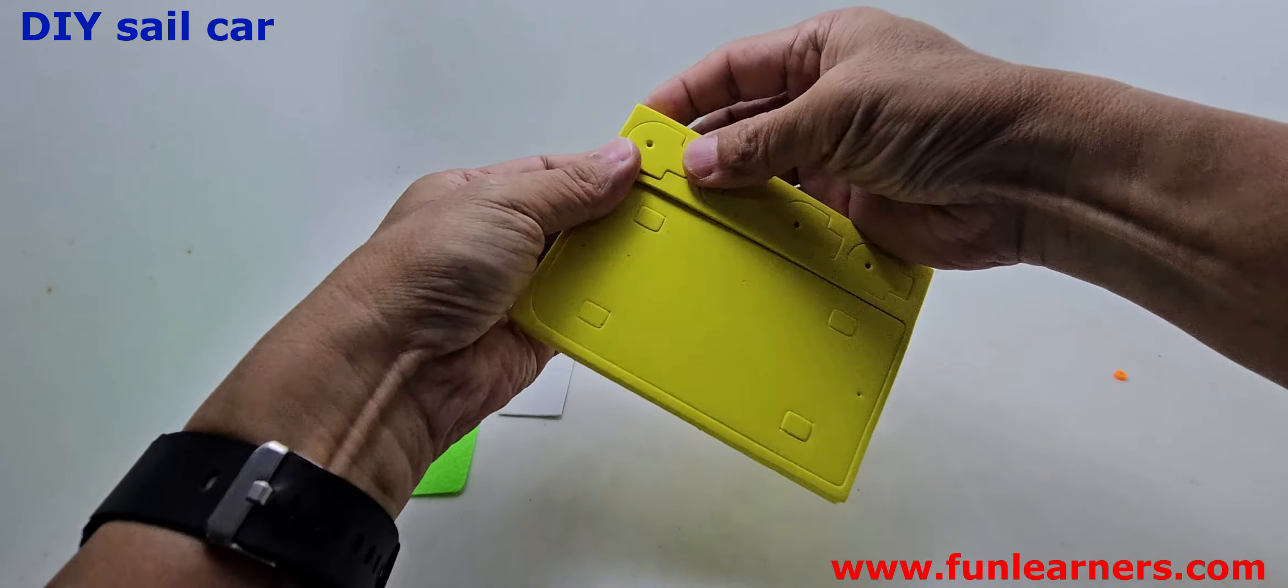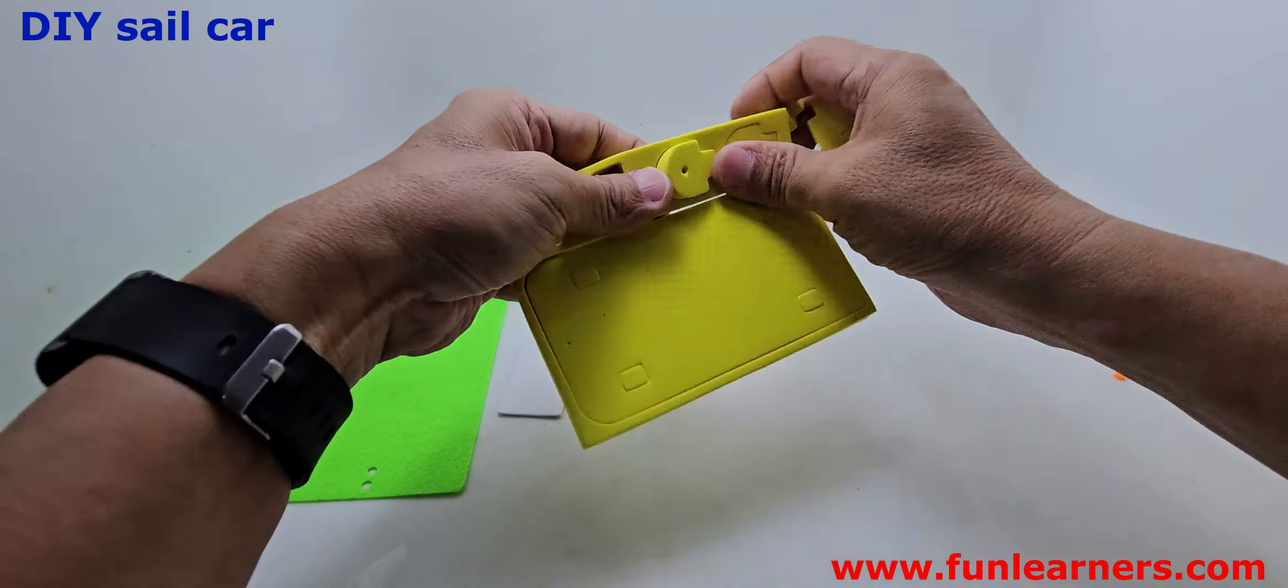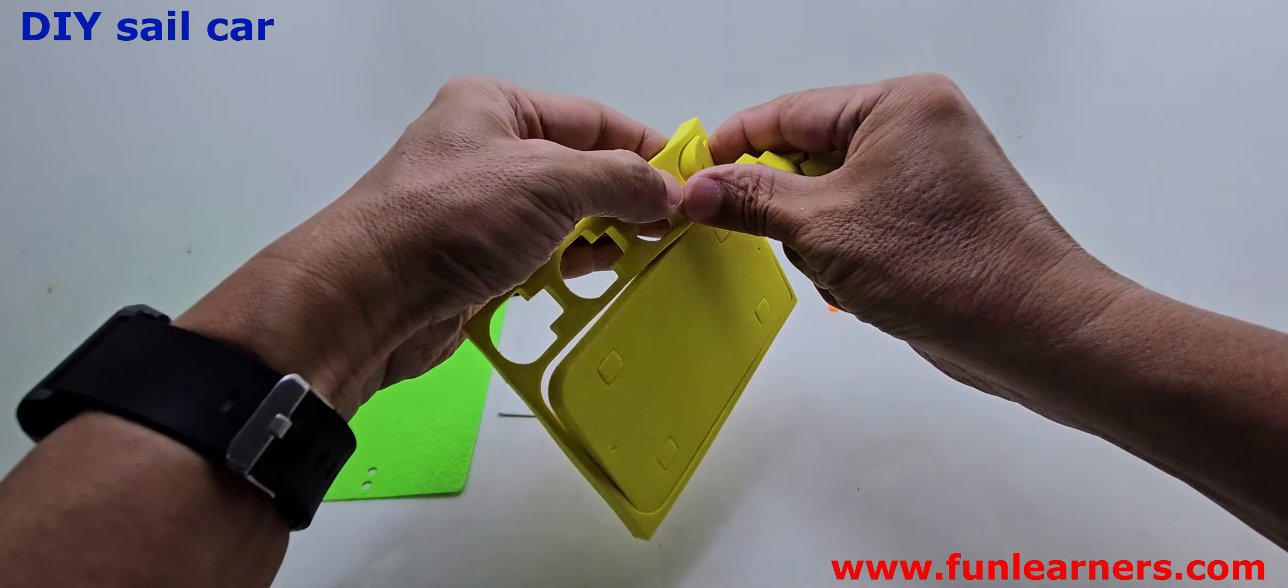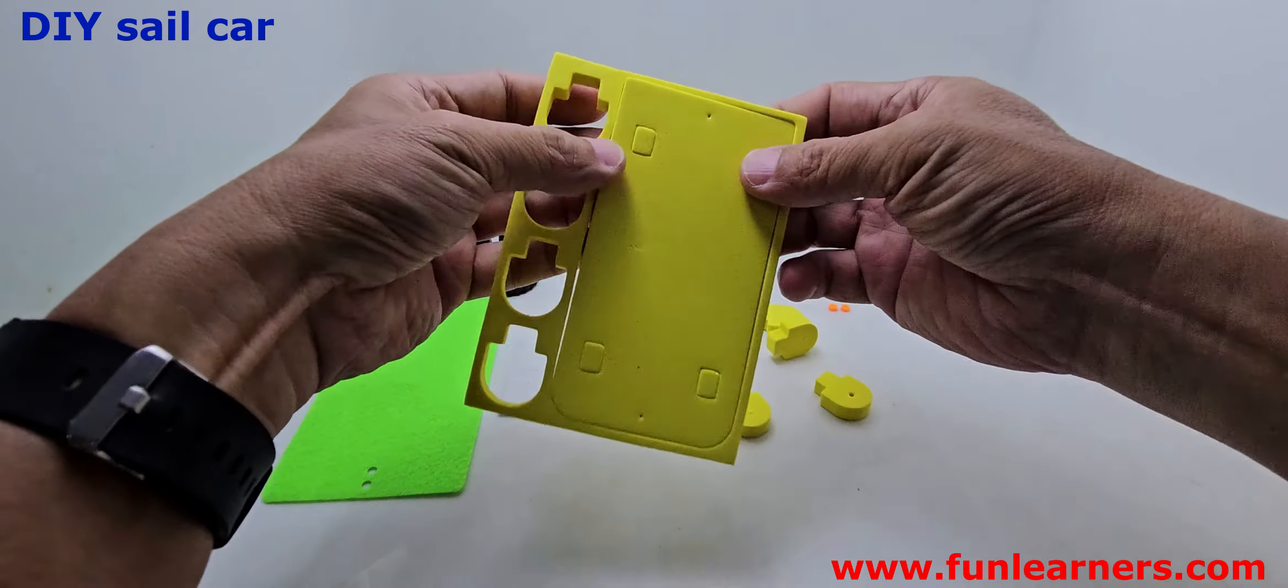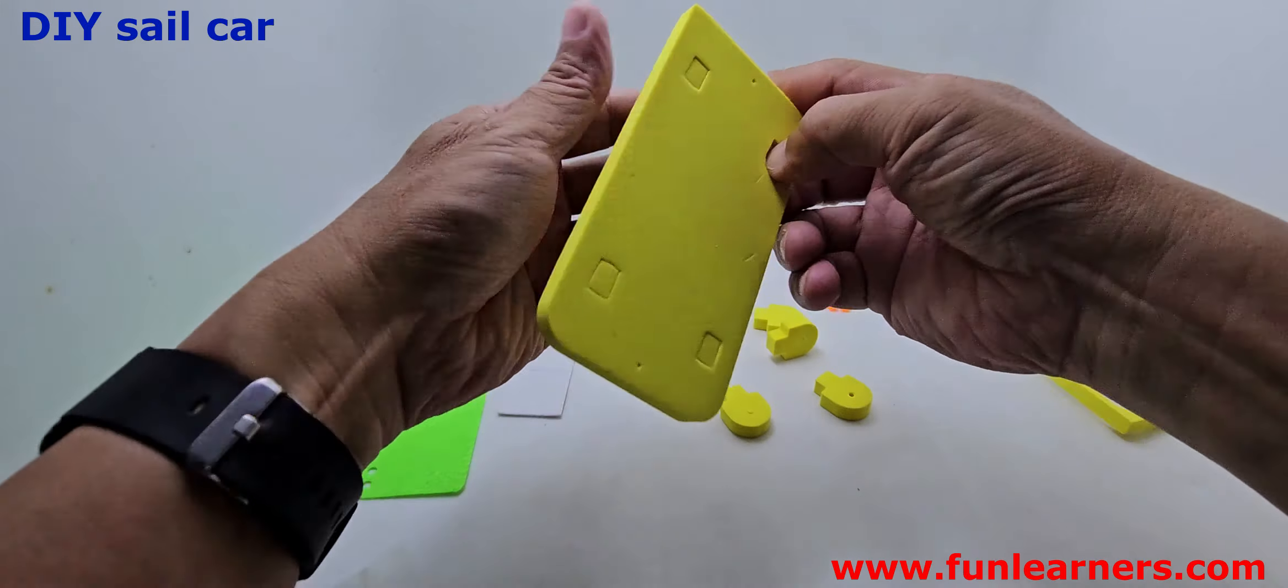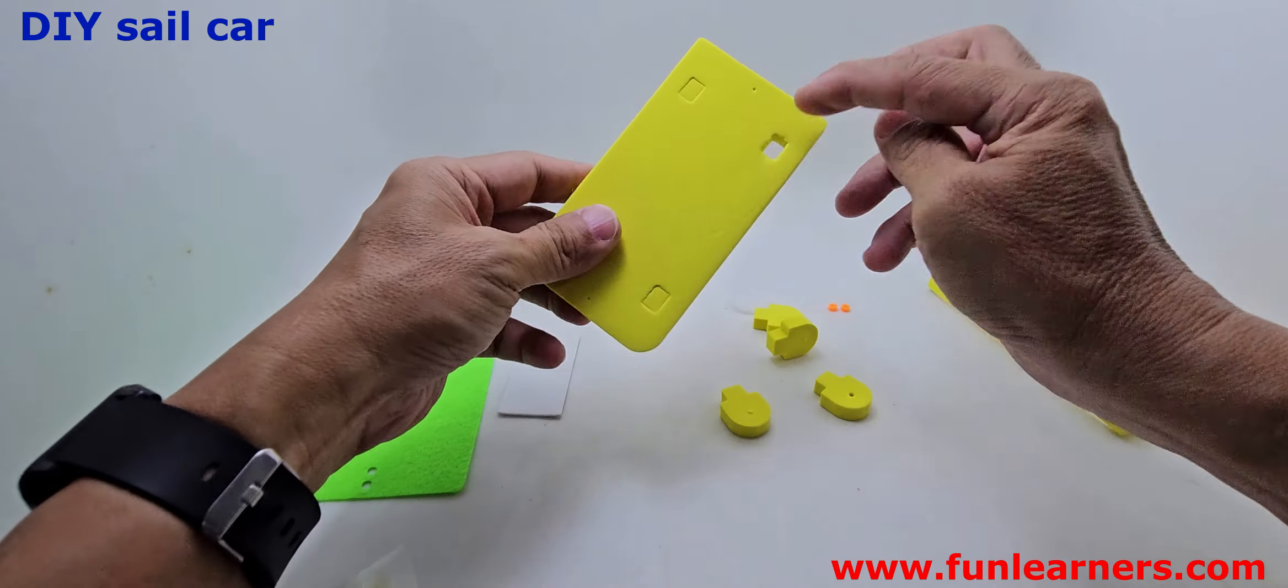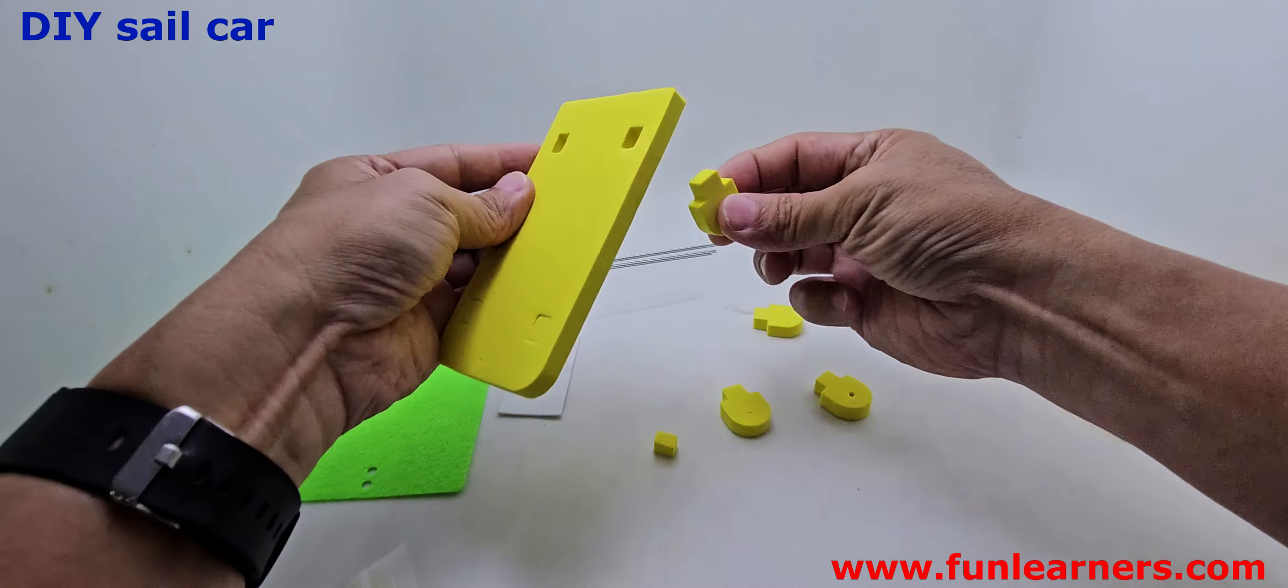Then remove these few parts out: one, two, three, four. This will be the holder for your wheels. And then remove this big piece which is your base for your car. Remove this slot right, this is for this to go in later.